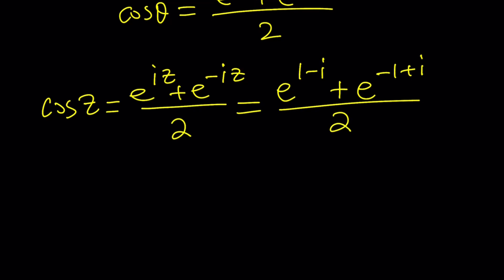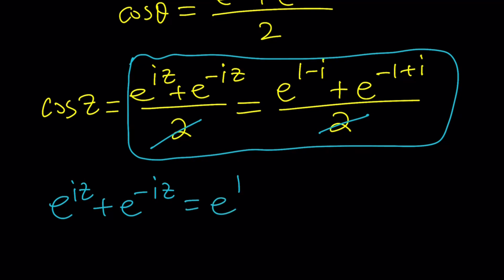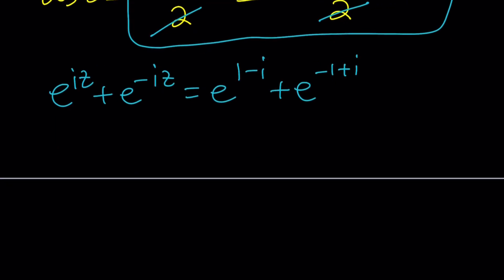Our goal from here — we can now forget about cosine z — is to solve for z. Notice that they are kind of very similar: e to the power of something plus e to the power of something else. Let's go ahead and get rid of the twos first, giving us a simpler equation. At this point you might think we already got the answer, but the million-dollar question is: how many solutions do you see?